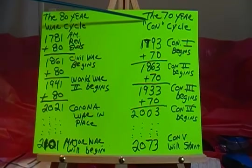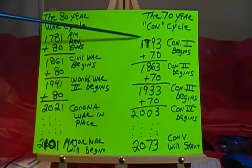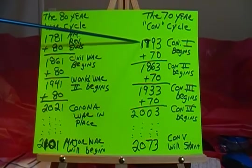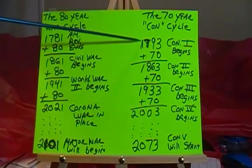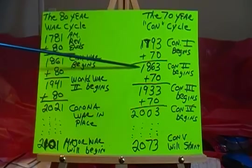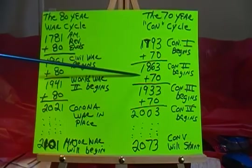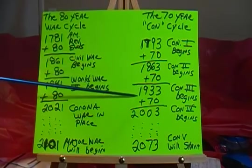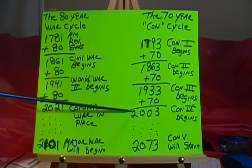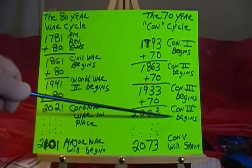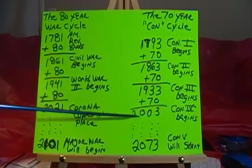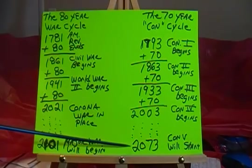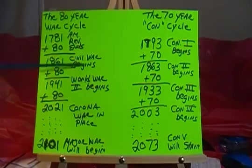The 70-year cycle I call the con cycle. The first con begins in 1793. We add 70 to that, it takes us to 1863 — the second con begins. We add 70 to that, and that takes us to 1933. And we add 70 to that, it takes us to 2003, where the fourth con is now in effect. When will the next con take place, con number five? 2073. Follow these cycles.